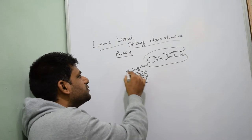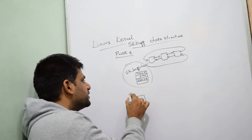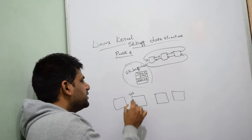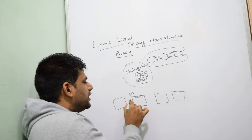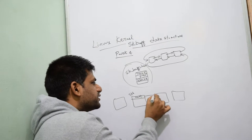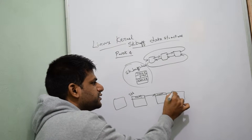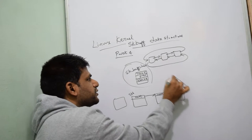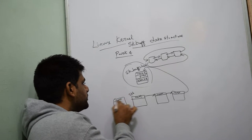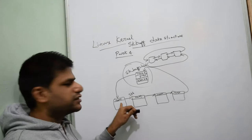With this, sk_buff_head forms the head of the linked list and can have multiple nodes, where each one is an SKB instance. Like any traditional linked list, each SKB will have a variable called next that points to the next SKB instance. So this next points here, this next points here, this next points here, and the last next points back to the head, forming the chain.